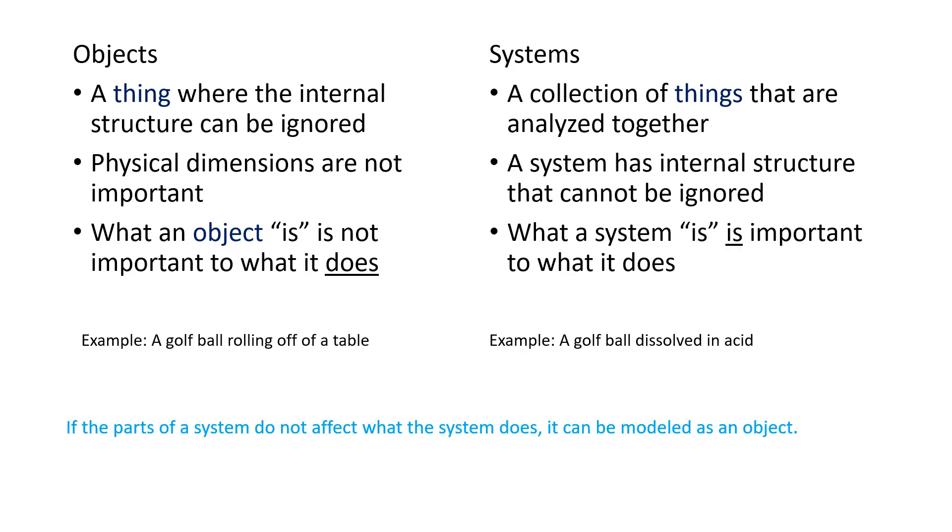Sometimes we need to model things as objects, and sometimes we need to model them as systems. If the parts of a system don't affect what the system does, then in physics, we can model it as an object. A lot of the things we're going to learn in the second semester are basically how do we take a system and make it look more like an object. That's kind of our goal to simplify things in physics.